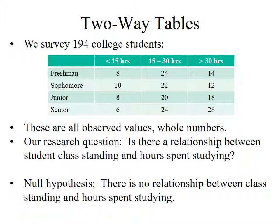Our research question is: is there a relationship between student class standing and hours spent studying? It looks like, based on this data, the seniors spend more hours studying than the freshmen — so maybe there's a relationship there. Or maybe this is just due to random variation. I want to know: does this data fit within what we'd expect from random variation, or is it significantly different from what I'd expect if there was no relationship?